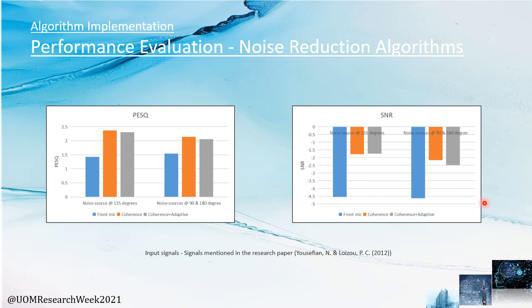We combined the two noise reduction approaches and here are the results: after only stage 1, and after the combination of stage 1 and 2. As input signals, we used 0 dB SNR signals with multi-talker babble and speech-shaped noise types. The graph shows an average of SNR and PESQ values for those signals, with noise sources at 135 degrees and two noise sources at 90 and 180 degrees. We could not see a clear increase in SNR and PESQ values from the algorithm combination, but we could hear an improvement in the output. We therefore decided to test the performance further using subjective metrics.